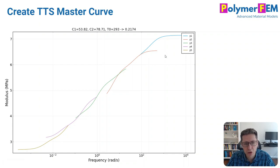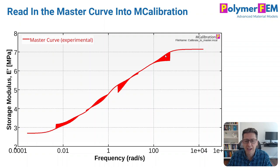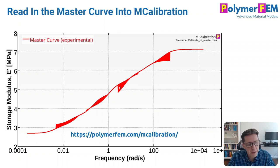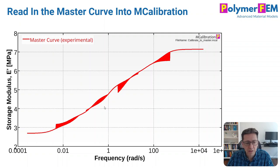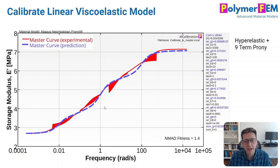So here's my master curve. I export it to a file and I put it into mCalibration, my favorite material calibration software. And here is the plot in mCalibration of storage modulus versus frequency, and this is what I will use for my calibration. So I can very quickly in mCalibration select a linear viscoelastic material model. I can use Abaqus or Ansys or some other one. In this case I used Abaqus.